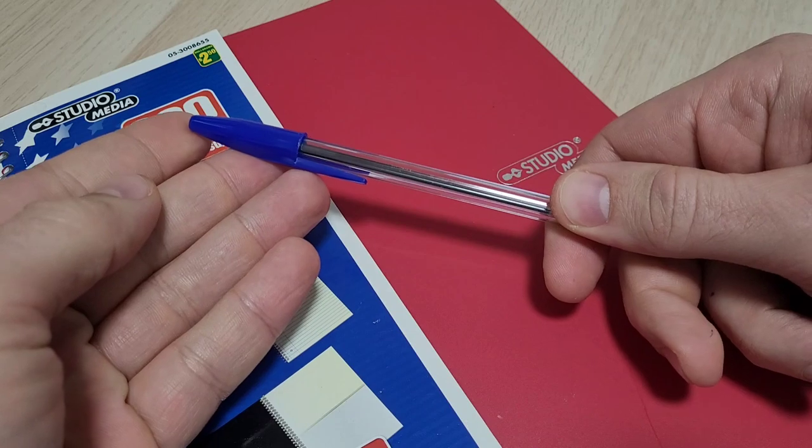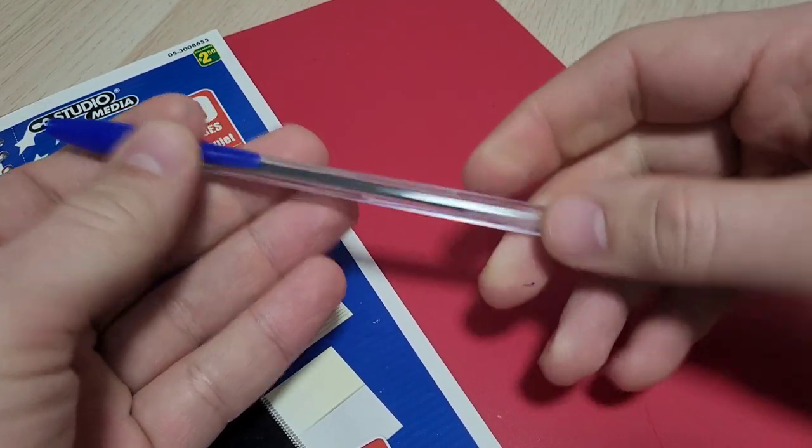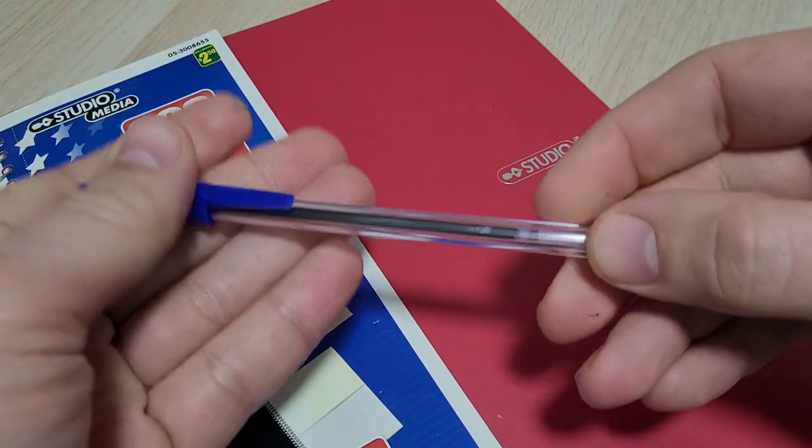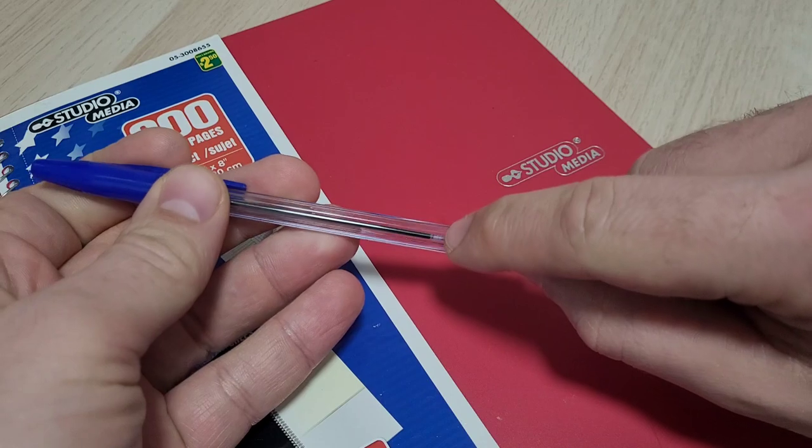You can find this in the Museum of Modern Art. It comes in six different points, 18 colors, and it's also the most copied pen ever. Just like this one, this isn't even the real Bic. This is the dollar store ripoff.